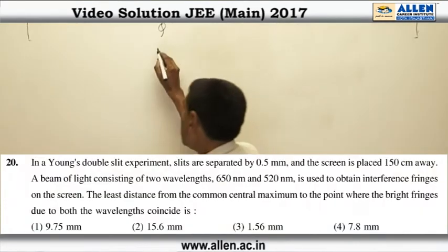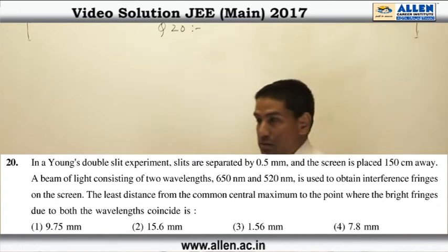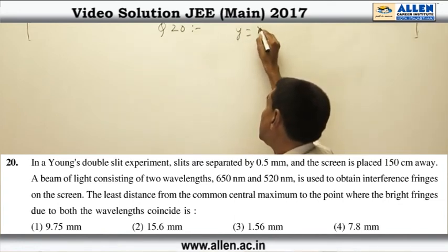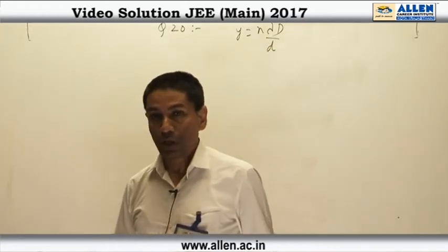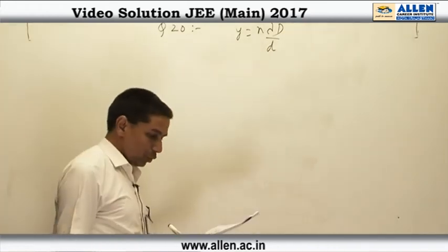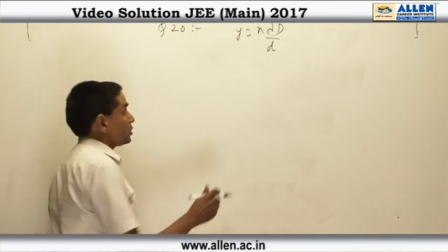Question number 20. In a standard YDSE apparatus, the location of a maxima is given by nλD by d. So we have to locate a position where the maxima of both 650 nanometer and 520 nanometer coincide with each other.